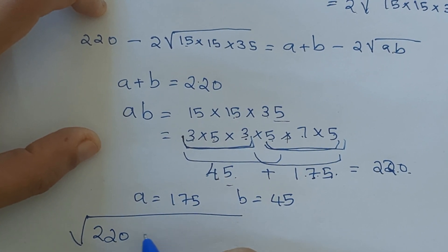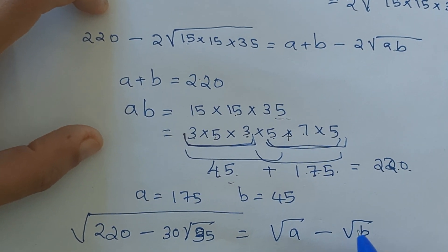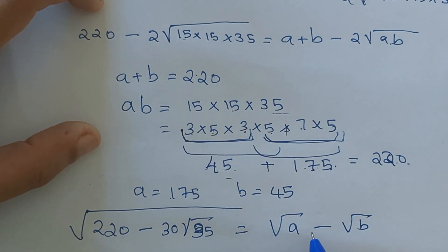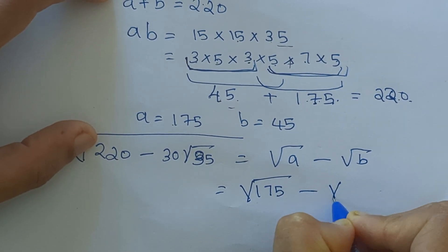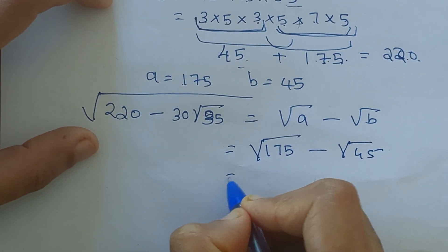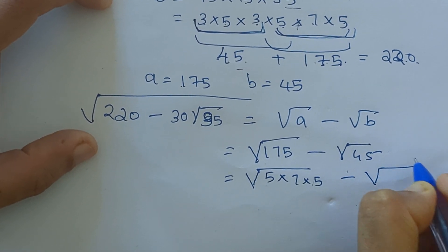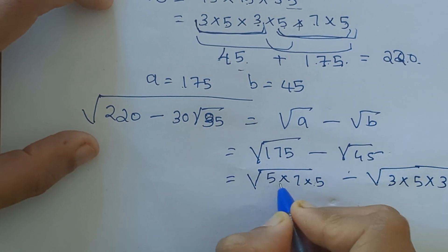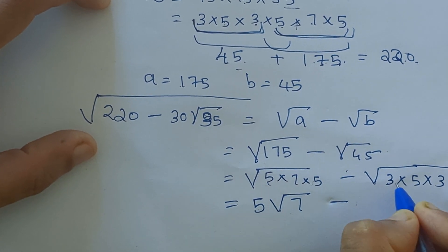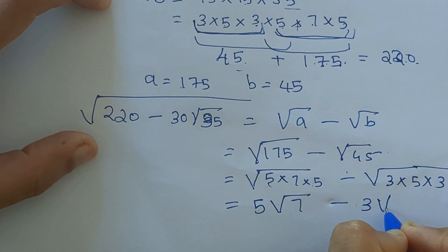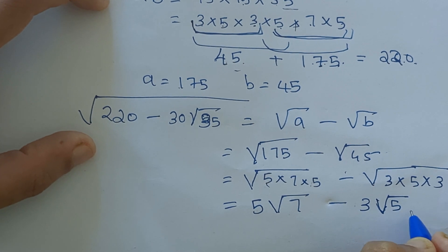In the beginning we equated root of (220 minus 30 root 35) to root a minus root b. We got a equals 175 and b equals 45, so the expression equals root 175 minus root 45. Since 175 = 5 × 5 × 7 and 45 = 5 × 5 × 3 × 3, we can simplify to 5 root 7 minus 3 root 5.